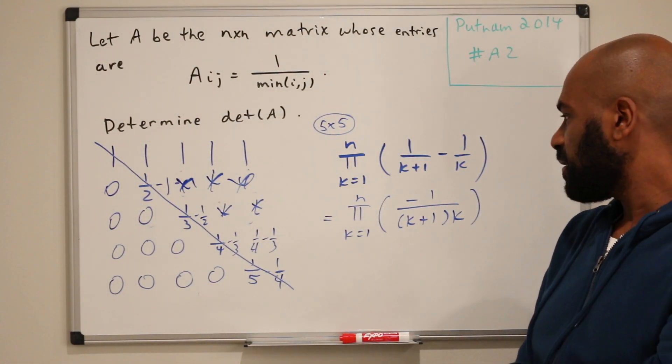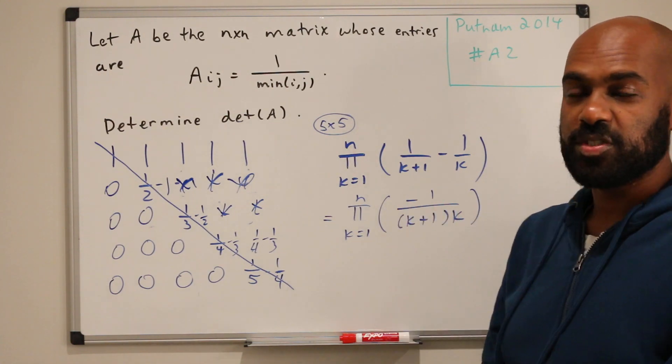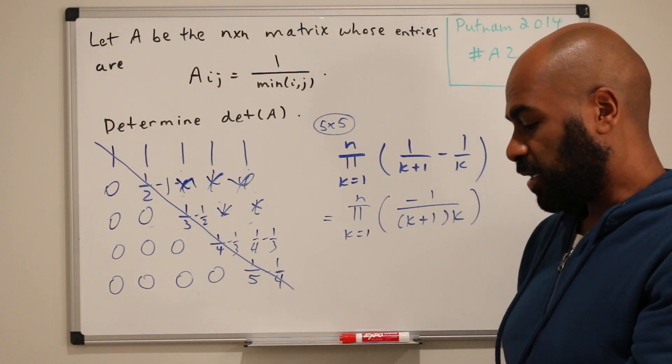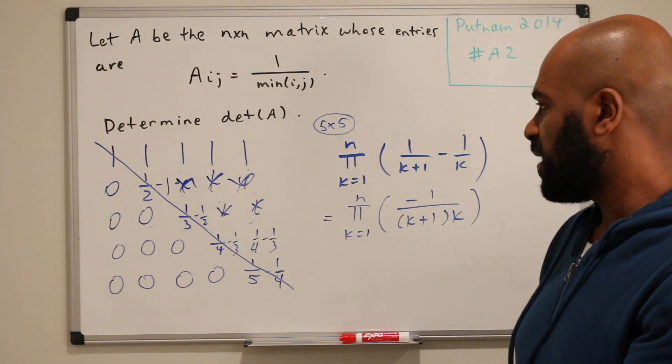And so we're left with something like this, which we could if you want to simplify into products of factorials, but I'll leave it as that.